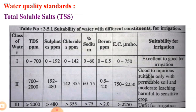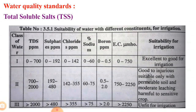The first parameter is total soluble salts (TSS). The total concentration of soluble salts is the most important criterion for quality of irrigation water, because salinity of soil solution is usually related to the salinity of irrigation water. The total concentration of soluble salts is expressed as electrical conductivity (EC).